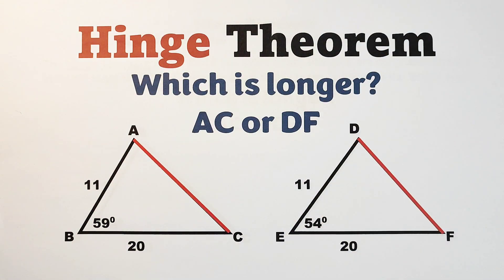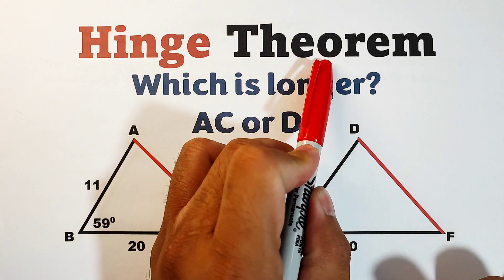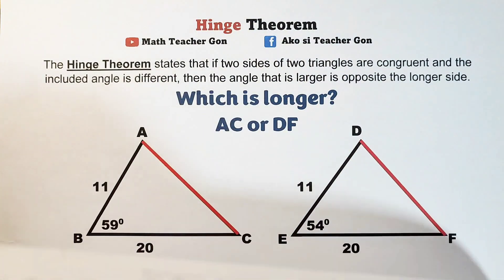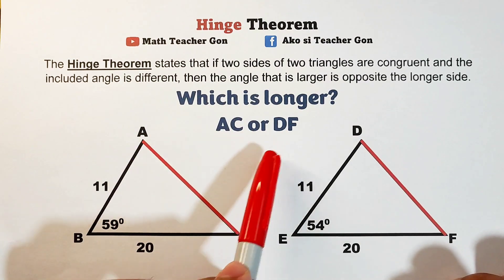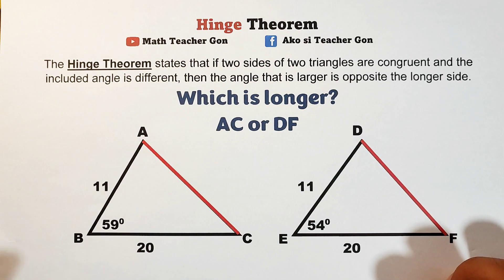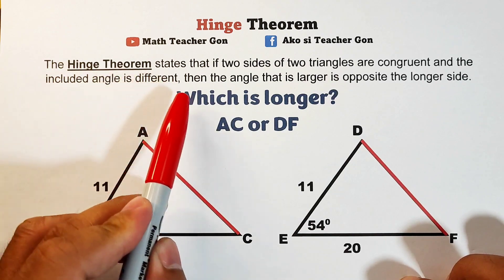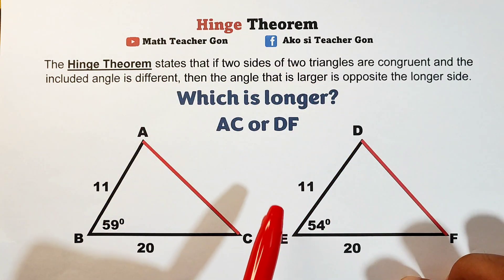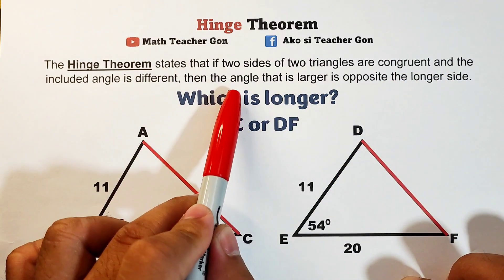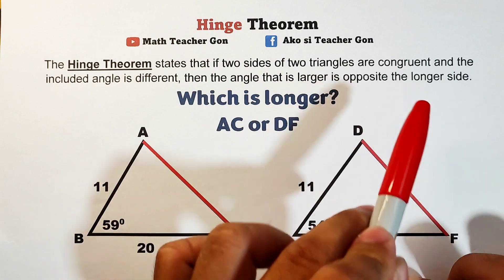Hi guys, it's me Teacher Gone. In today's video we will talk about the Hinge Theorem. Before we start answering the question, let us define and state what is meant by the Hinge Theorem. The Hinge Theorem states that if two sides of two triangles are congruent and the included angles are different, then the larger angle is opposite to the longer side.